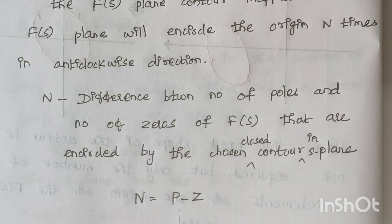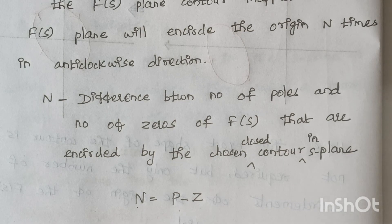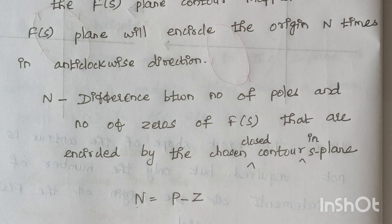Regarding Nyquist stability criteria, the number of encirclements plays an important role, and depending upon the number of encirclements we will finally conclude whether the system is stable or unstable. This concludes the preliminaries of Nyquist stability criteria. I hope you understood the video. If you have any doubt, let me know in the comment section. Thank you.